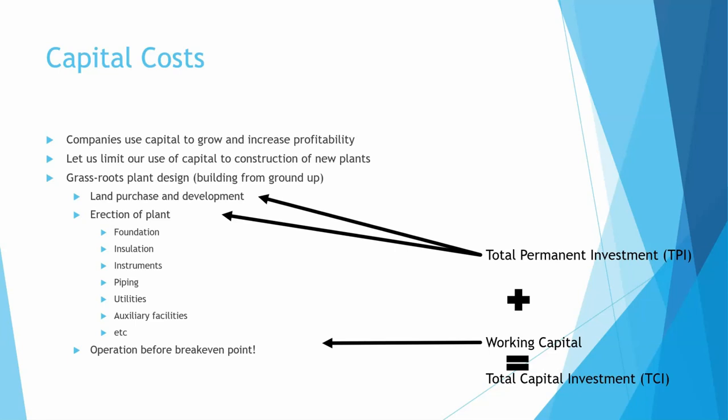Once you start producing the actual chemical you're going to be selling, you're going to have to pay workers to come in: engineers, supervisors, janitors, cafeteria workers, any related costs at all. You're going to put that all in, and that's going to be your working capital.